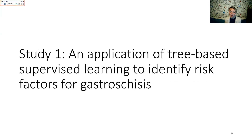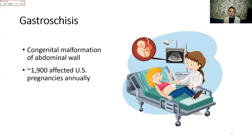That takes me to the two applications I'll discuss. The first is an application of tree-based supervised learning to identify potential risk factors for a birth defect called gastroschisis. This is a congenital malformation of the abdominal wall, affecting roughly 1,900 pregnancies in the U.S. each year — a fairly rare but very serious outcome.